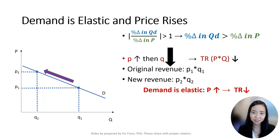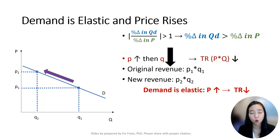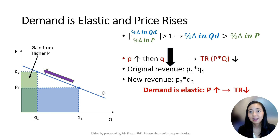What happens if the demand is elastic and the price rises? If demand is elastic, the percentage change in quantity demanded is greater than the percentage change in price in magnitude. Therefore, draw an upward pointing arrow to indicate the price rises, then draw a thick downward pointing arrow to indicate that quantity demanded drops by a lot. Total revenue will be dominated by the thick arrow and go down. The original total revenue is P1Q1, the blue rectangle, and the new total revenue is P2Q2, the green rectangle. Although there will be a little gain from the higher price, the gain is overshadowed by the revenue loss from a smaller quantity. As a result, total revenue goes down.